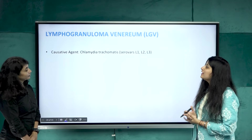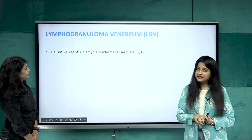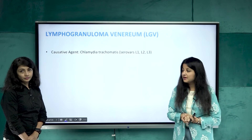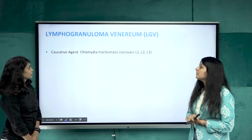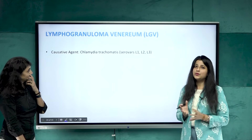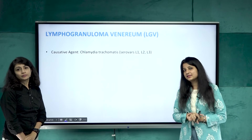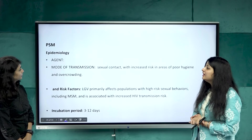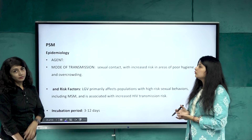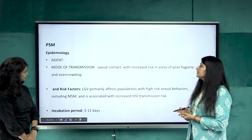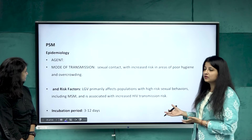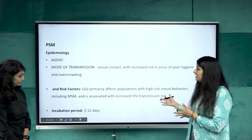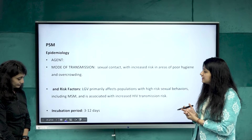Moving to the next genital ulcer disease: lymphogranuloma venereum (LGV). The agent is Chlamydia trachomatis. Mode of transmission is sexual contact, with the same social factors responsible.